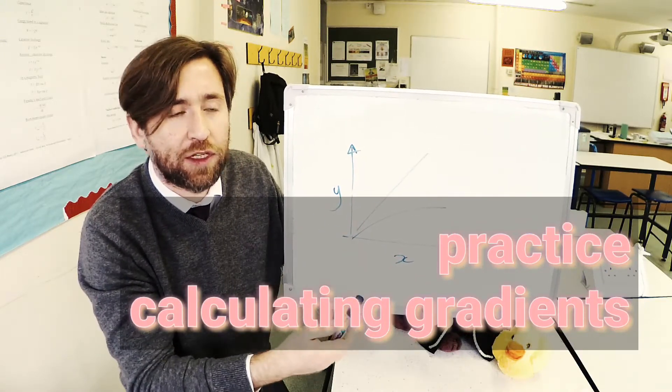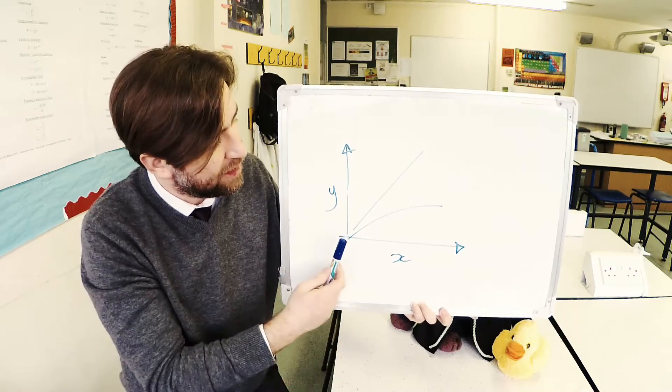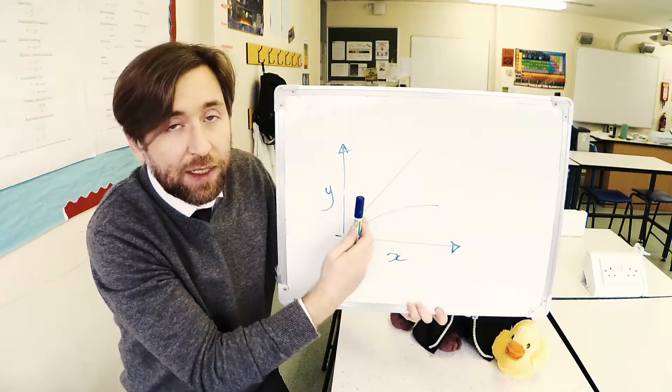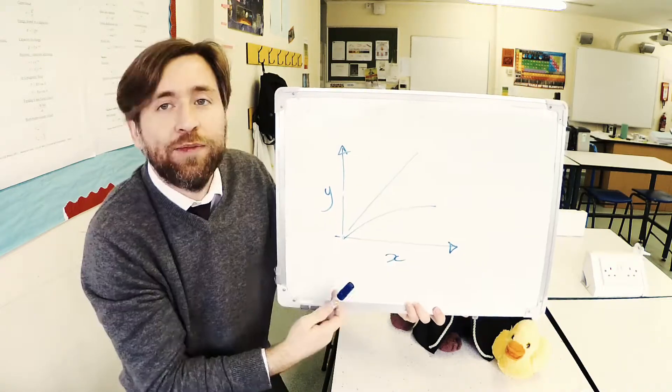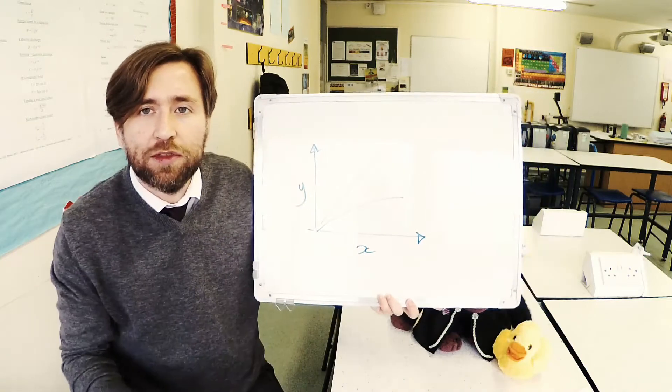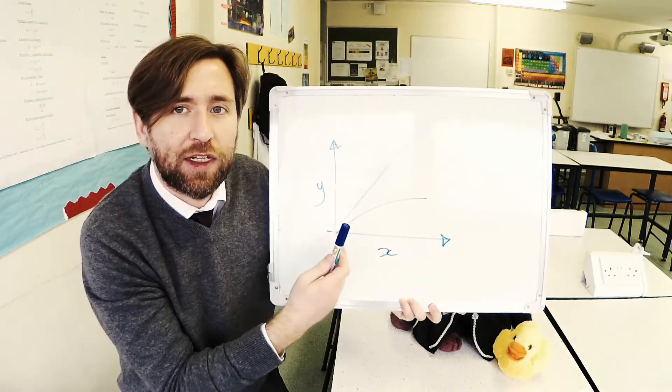Recognising what the gradient of the graph shows is a really important thing. Because then you can also be describing how this gradient is changing. This one is steeper at first and less steep later. But it could easily be a curve which is shallower at first and steeper later. What do those different things show? What does the changing gradient show?